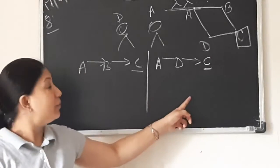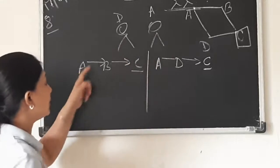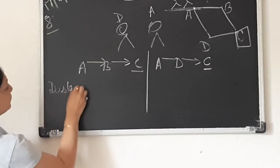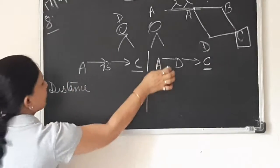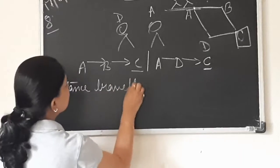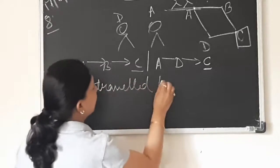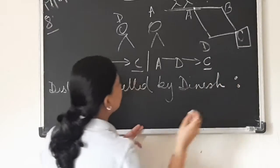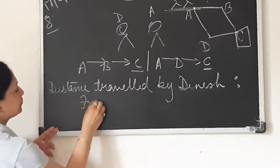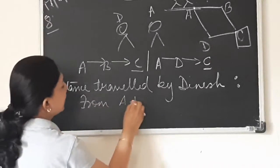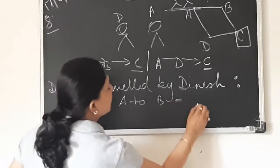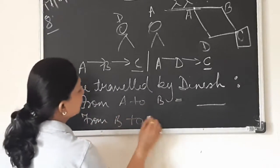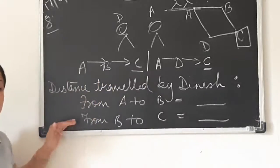And here now, you must have understood that for Dinesh, you will write down the sentence: distance travelled by Dinesh. Then write down from A to B, how much distance he has travelled, and then from B to C, how much distance he has travelled.